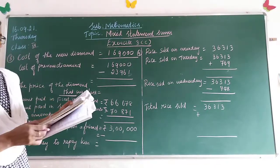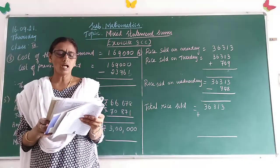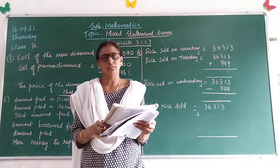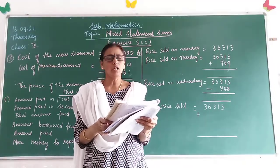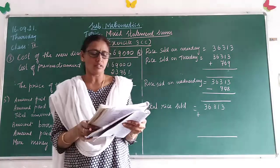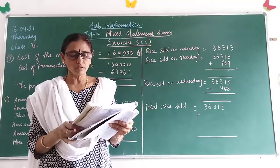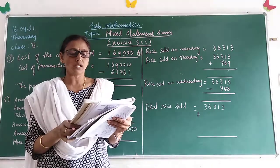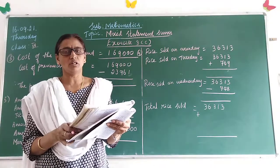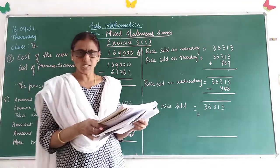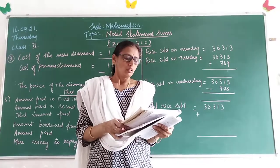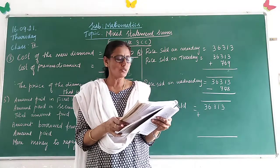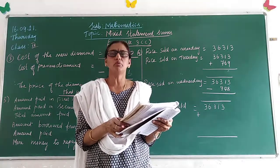Children, a young girl lost a diamond ring. The father bought another one that cost 23,961 more than the previous one. If the father bought the new diamond ring for 1,69,000, what was the price of the diamond ring that was lost? First, you have to understand what is given here.